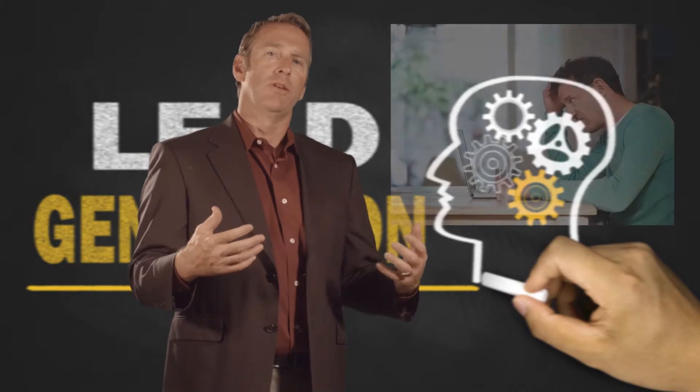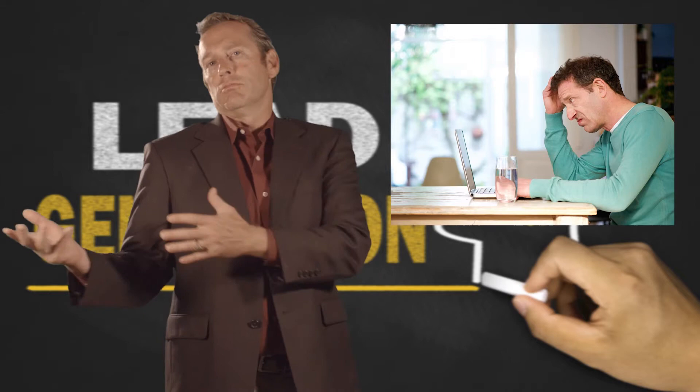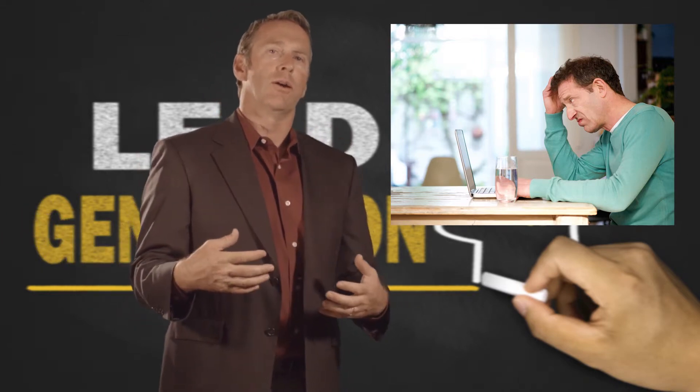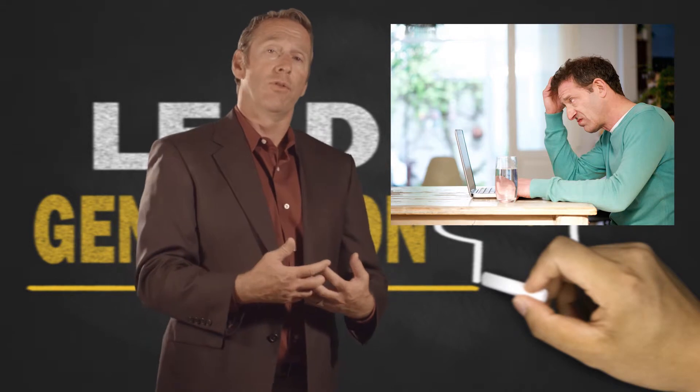Take that same lead source and put it against Loan Officer B. Eight out of ten leads are bad dead leads. You go look at the lead records to find out why they're bad dead leads, and you can't find any notation as to how well they were worked, when they read messages left, or what the effort was.